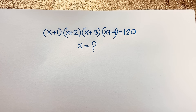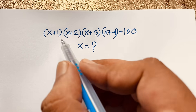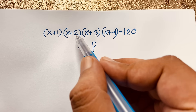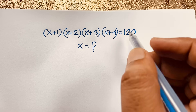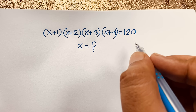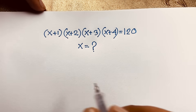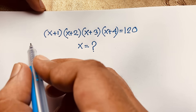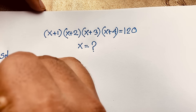Welcome to my YouTube channel. Today we have solved an interesting Math Olympiad question. The question is: (x+1)(x+2)(x+3)(x+4) = 120. What is x? How do we solve this viral Math Olympiad question?